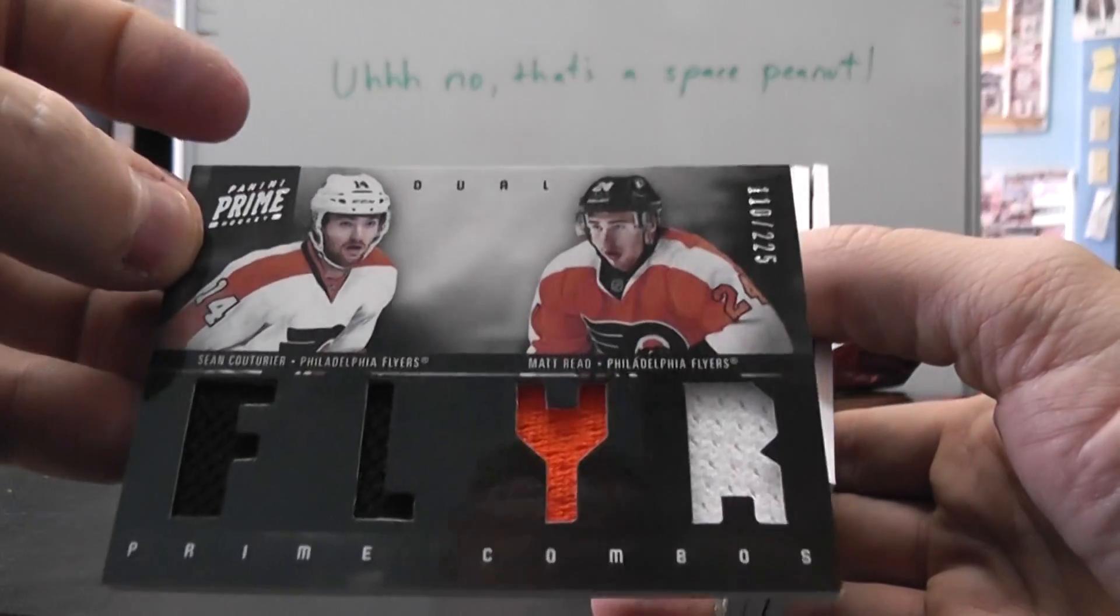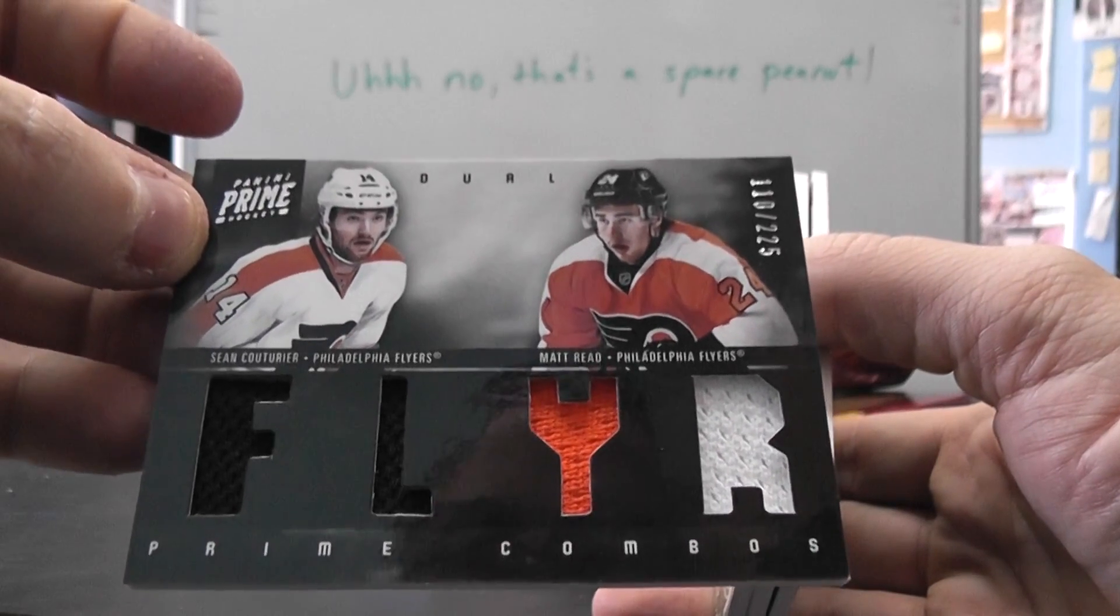We have a dual here, quad jersey, dual per Sean Couturier, Matt Reed $225.